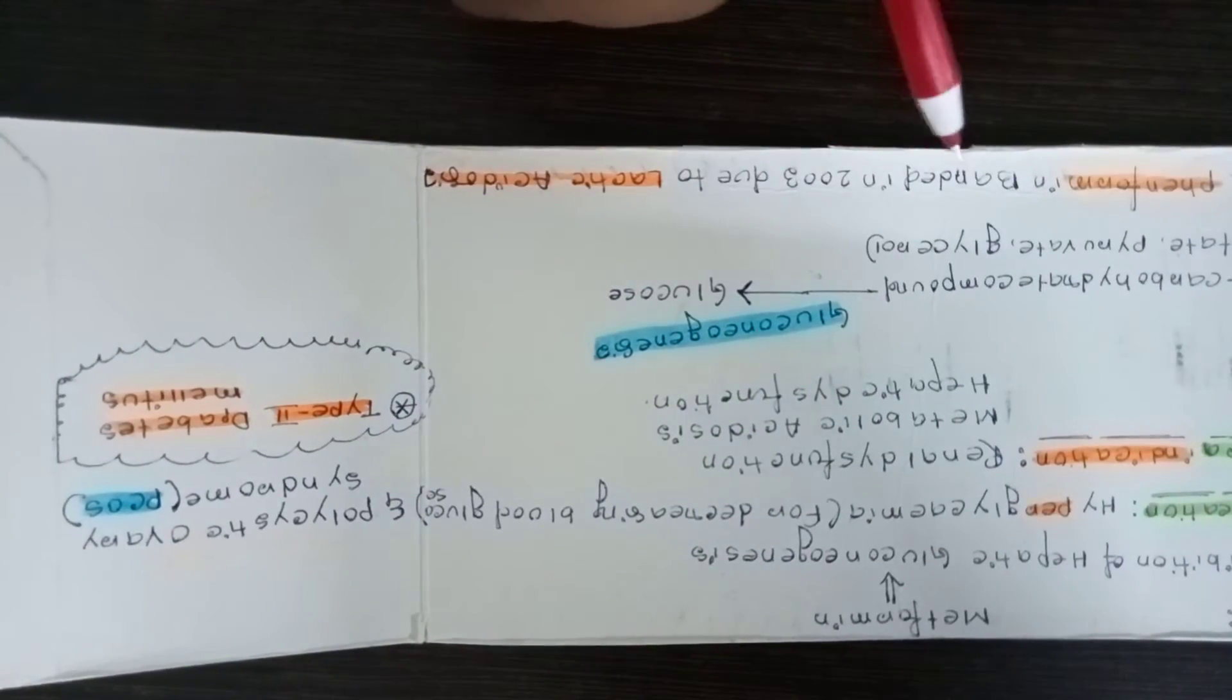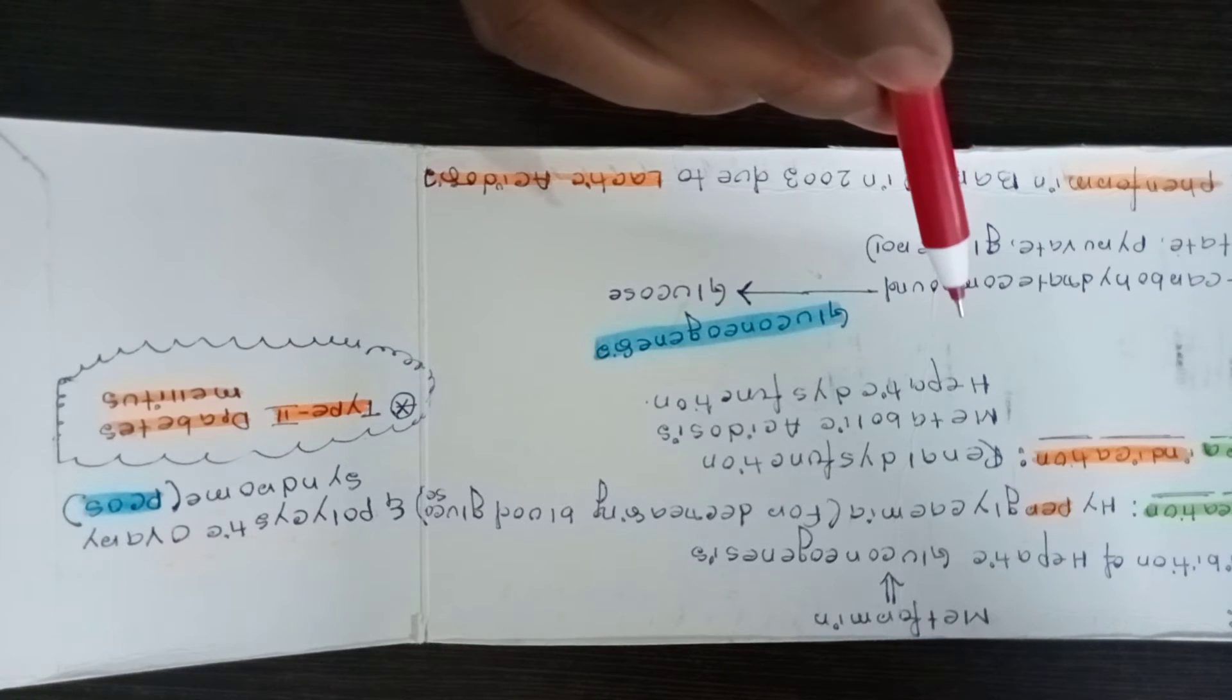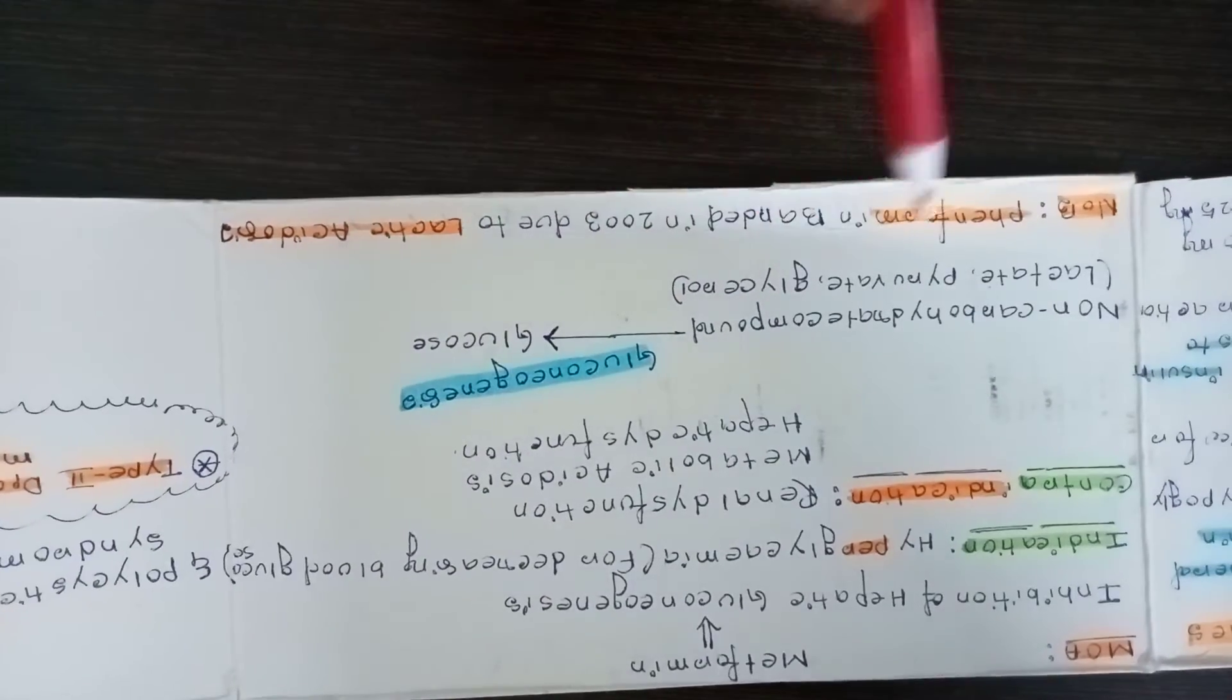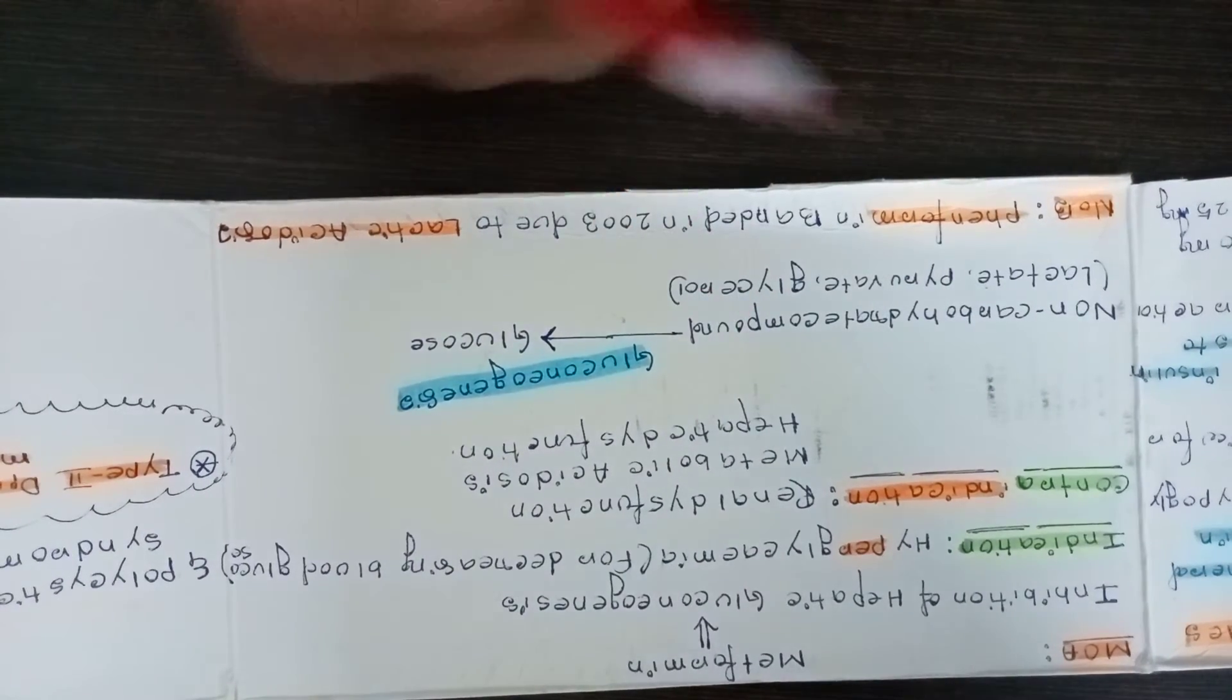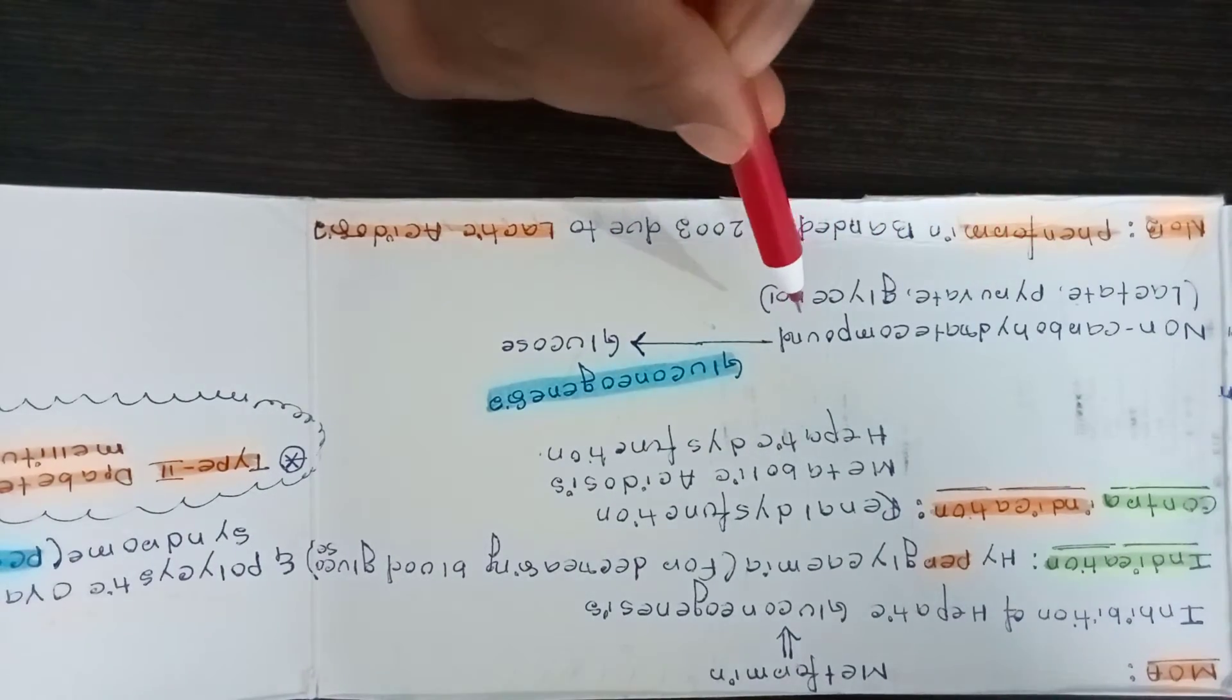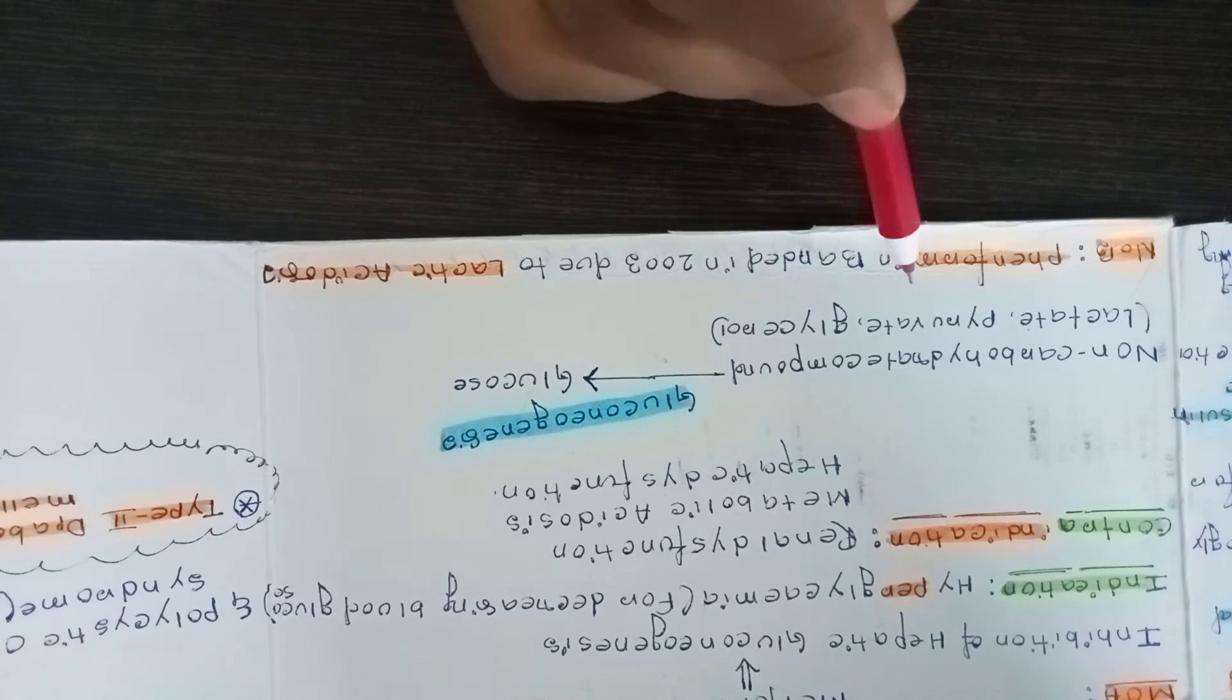One more important thing: the main mechanism of the drug is inhibition of hepatic gluconeogenesis. What is meant by gluconeogenesis? Gluconeogenesis means synthesis of glucose from non-carbohydrate compounds. What are the non-carbohydrate compounds? That is lactate, pyruvate, and glycerol.